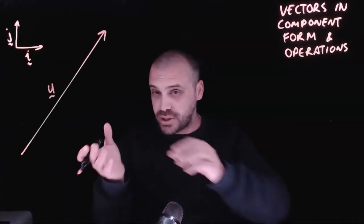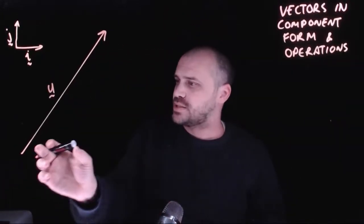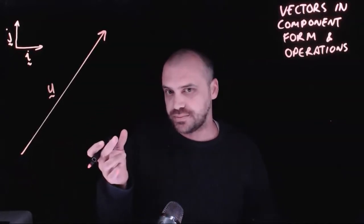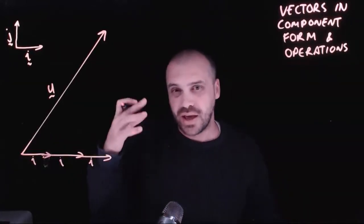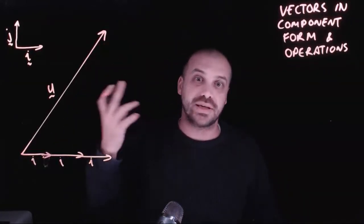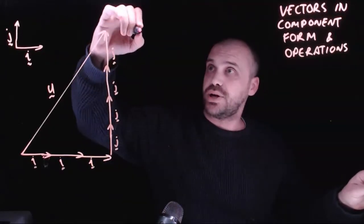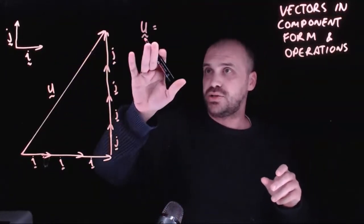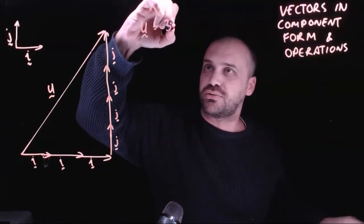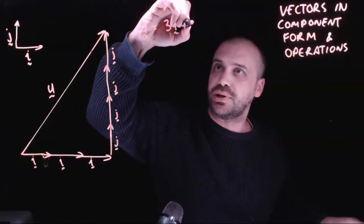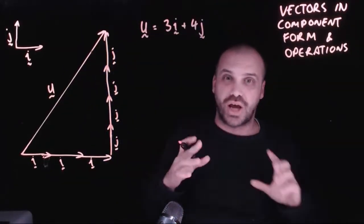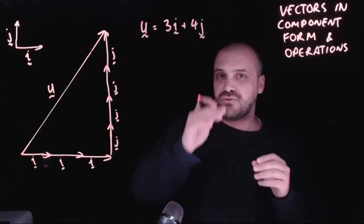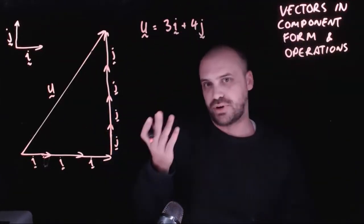Now this is really useful because if I have a vector like this, vector u, I can say how many i vectors across is it? Three i vectors across and how many j vectors is it up? So we can now express the vector u purely algebraically as u is equal to three i vectors plus four j vectors, often thought of as three in the i direction and four in the j direction.